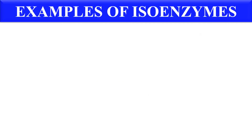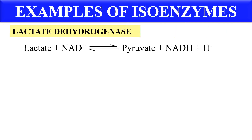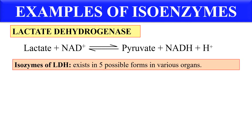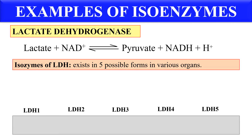Now let's discuss some examples of these isoenzymes. The first is lactate dehydrogenase enzyme. This enzyme catalyzes the reaction that converts lactate into pyruvate. This lactate dehydrogenase enzyme has 5 possible isozymes or isoenzymes: LDH1, LDH2, LDH3, LDH4, and LDH5. So these are the 5 different isoenzymes of the LDH enzyme.